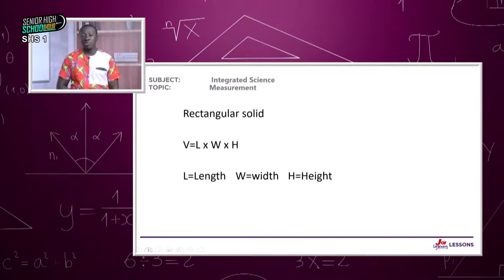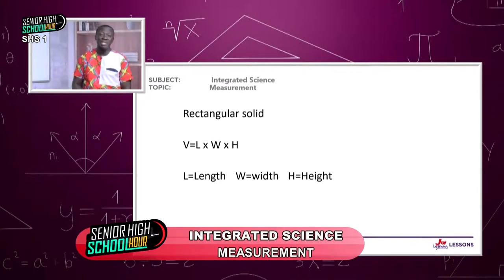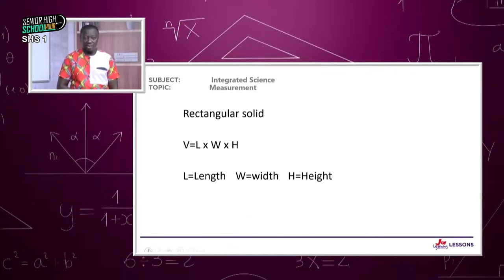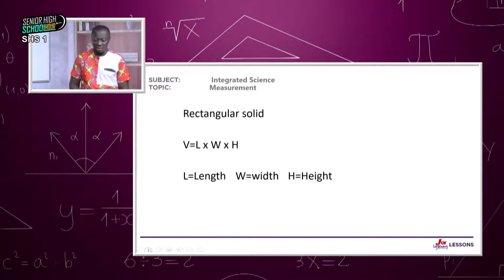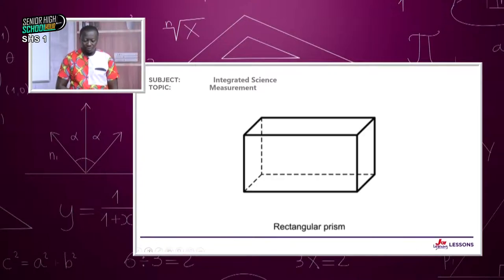We can also have a rectangular solid. Since rectangular solids do not have the same dimensions, we factor in all dimensions: volume equals length times width times height, where L is the length, W is the width, and H is the height. On screen we have a picture of a rectangular prism.